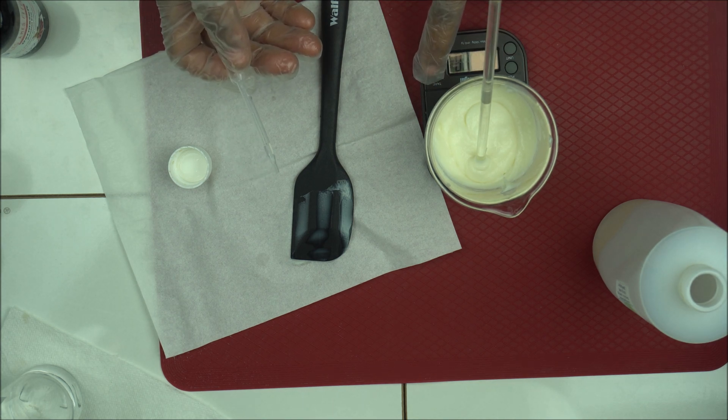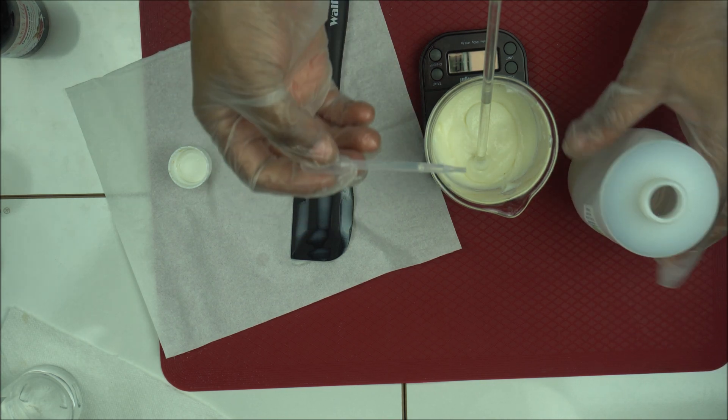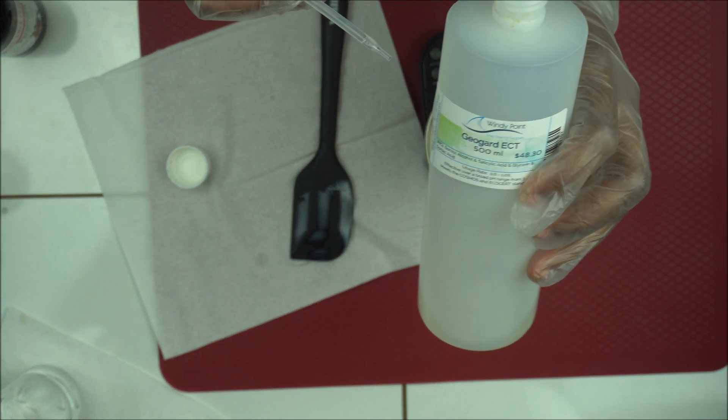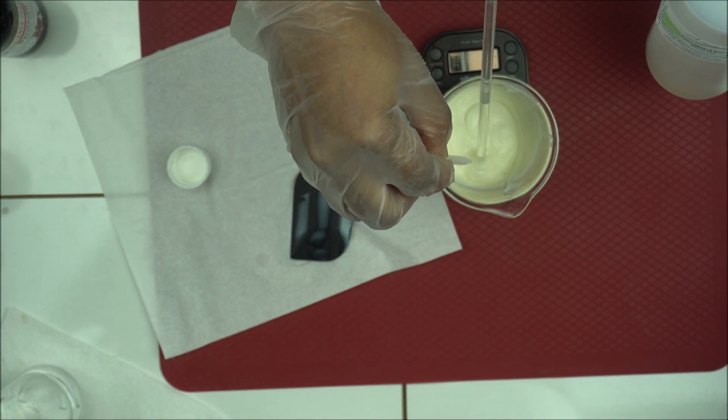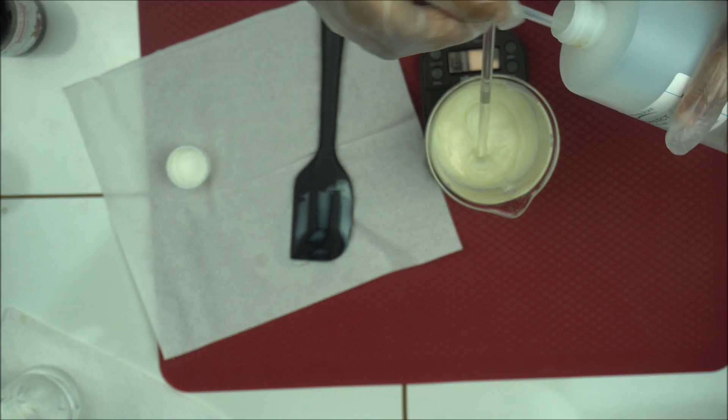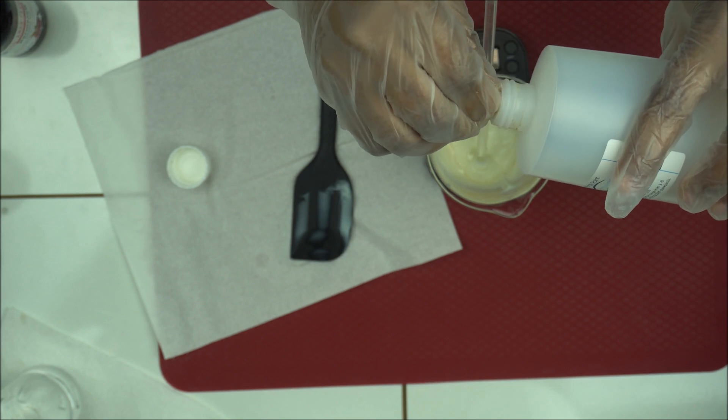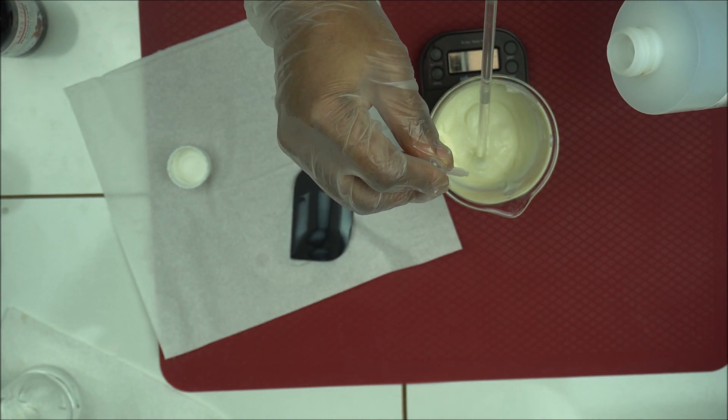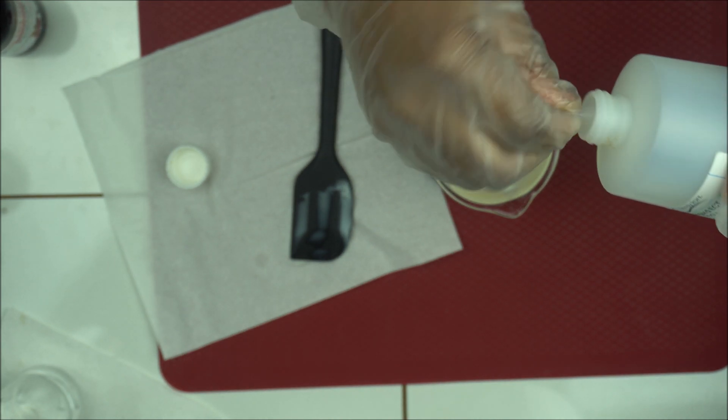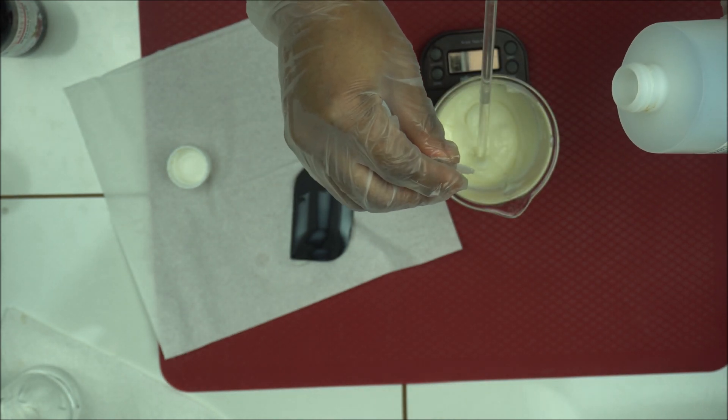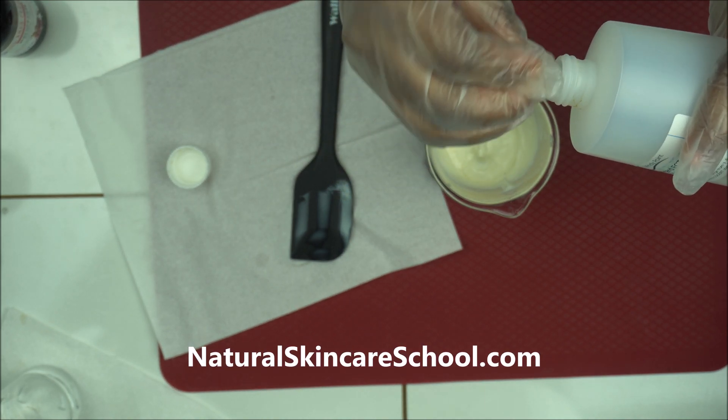Put on tare, and then I'm going to add 1% of Geogard ECT preservative. It's very important that you add 1% because overusing your preservative can cause a lot of skincare issues, a lot of stability issues. So make sure you use it at the recommended rate by the supplier or the manufacturer.